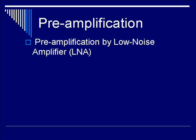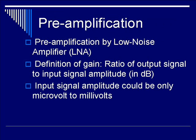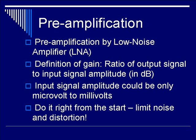The ultrasound echoes that return from the transducer are amplified with a low noise amplifier, otherwise known as LNA. The definition of gain through the LNA is the ratio of the output signal to the input signal in units of decibels, dB. The input signal amplitude is oftentimes very small, ranging from microvolts to millivolts. Therefore, by amplifying from microvolts to millivolt levels, it is important — aside from getting the desired amplitude — to limit the noise and distortion, because all of those things get amplified as well in later stages.